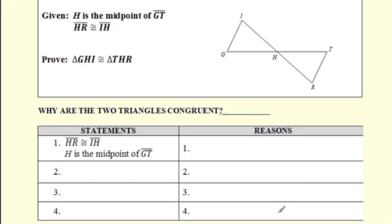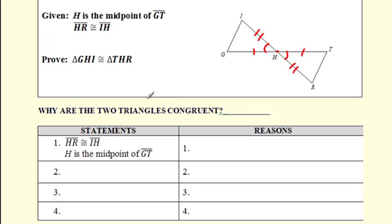So how's this going to look in a proof? This is where it gets tricky, and this is definitely in your Master Check — you've got to do one of these all by yourself. We always start with the given — that's number one, just rewrite the given. I highly recommend marking the picture. So H is the midpoint of GT — why would I tell you that? If H is the midpoint of GT, then GH has to be congruent to HT, so mark that. Also, HR is congruent to IH. Is there anything else I can see from the picture? Yes — I've got those vertical angles again. So now when I have it marked, I can see these two triangles are congruent by Side-Angle-Side.